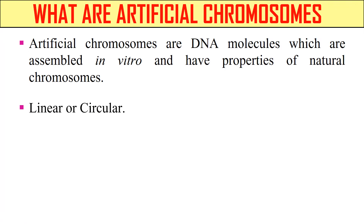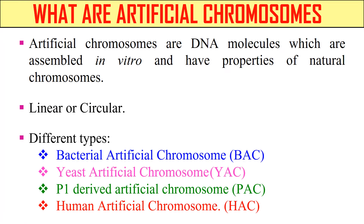Artificial chromosomes may either be linear or circular. Examples of artificial chromosomes include the Bacterial Artificial Chromosome (BAC), Yeast Artificial Chromosome, P1 Derived Artificial Chromosome, and Human Artificial Chromosome. Let's discuss each of them.